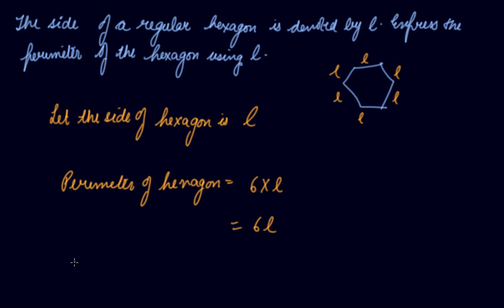If the side of hexagon is 10 centimeter, then what will be the perimeter? 6 times L. L is the side of the hexagon. The side is 10 centimeter, so 60 centimeter is the perimeter.